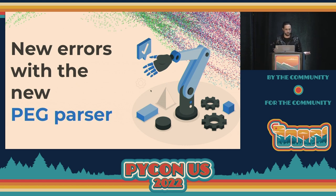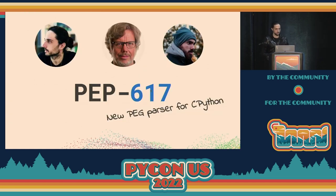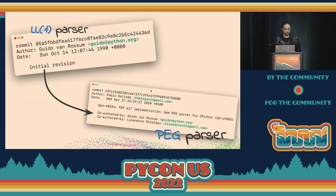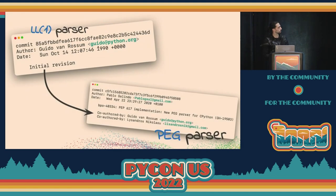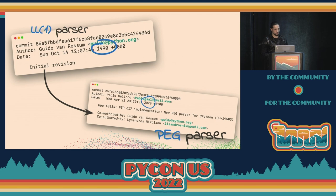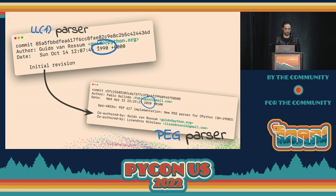Let me introduce the PEG parser. We did this together with Lysandre Janigro on PEP 617. We replaced the parser in CPython, which was originally introduced in 1990 — one of the first commits of Python from Guido. The new PEG parser was made 30 years after. The old parser was a resilient piece of technology, but we needed a new one because there were things we couldn't do with the old one.